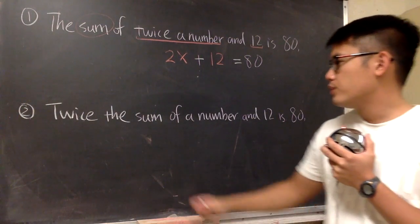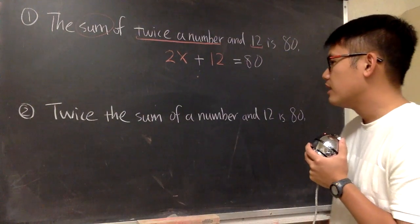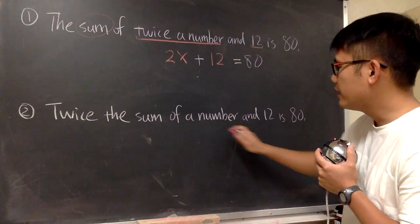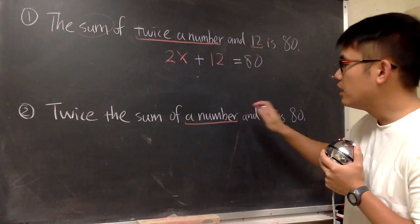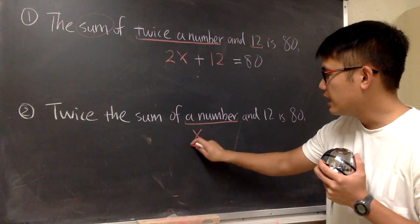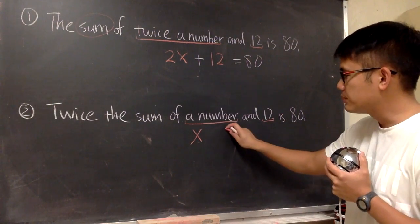In comparison to the second one, once again, we read this inside out. So right here, you see that we're talking about the sum of a number and 12. And we're looking for a number. Well, we don't know what a number is. So let me just put on x. And the other thing that we're working with is 12. So let's put on 12.